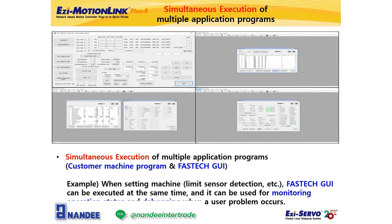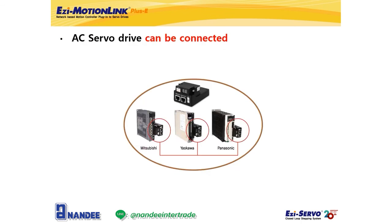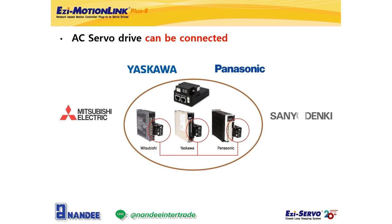If a problem occurs in the customer's machine program, it can be monitored by our GUI program, so it can also be used for debugging. Also, the built-in 2-port switching hub allows up to 254 axes to be connected. Compared to the RS485 communication type product, EZMotionLink Plus R, which was limited to 16 axes even at maximum, EZMotionLink Plus E has 10 times faster communication response time, so the number of connectable axes has increased significantly. Lastly, it can be connected to various AC servo drives — for example, Mitsubishi, Yaskawa, Panasonic, Sanyo, etc.